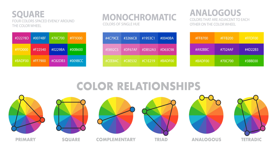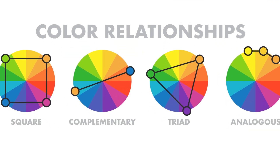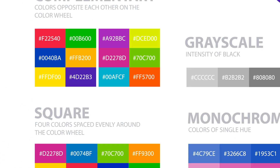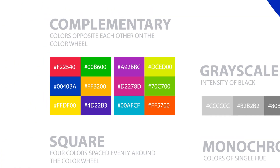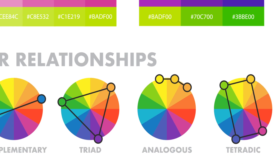The color wheel is an excellent tool for creating different color schemes and relationships. Complementary colors are opposites on the color wheel — red and green, for example — and you get a sharp contrast from facing colors, which can make your design stand out.